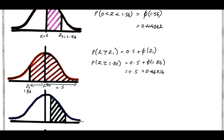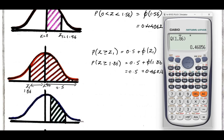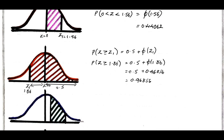Therefore, adding this with 0.5, I got the answer. Now, one more shortcut I can give for this problem. Before the calculation part, make this one correction: this is negative minus 1.86.